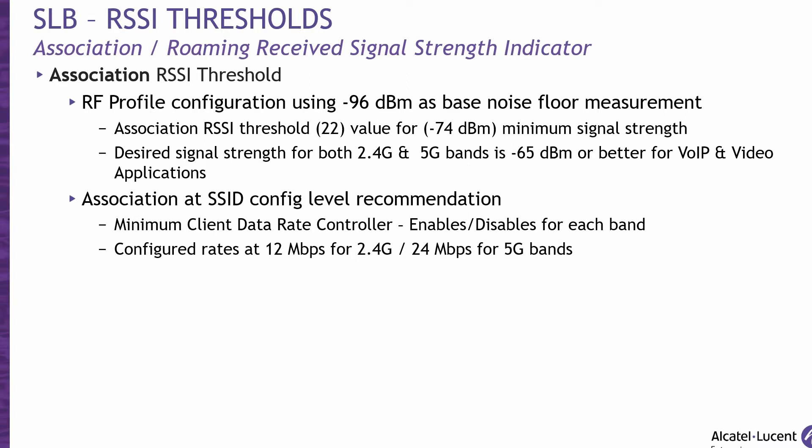Before I get into more details about RSSI thresholds for association and roaming, let me clarify how Stellar wireless RSSI values are converted to decibel measurements. These RSSI recommendations can be converted to decibels in relation to a milliwatt, also referred to as dBm, based on the base noise floor measurements. The calculation to convert uses the RSSI value in the range from 0 through 99 supported in Stellar wireless. For example, to calculate the desired signal strength for a voice over IP and video streaming application, we can use 31 as the RSSI value, then subtract it from minus 96 dBm — which is the base noise floor measurement — to obtain a desired value of minus 65 dBm to support voice over IP and streaming video applications.